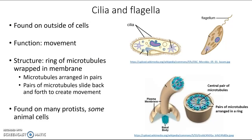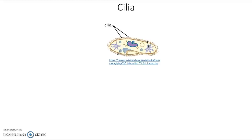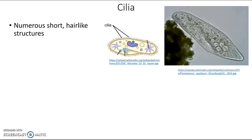Let's take a closer look at each one, starting with cilia. Cilia are numerous short, hair-like structures on the outside of a cell. Here in this diagram you can see all those little fuzzy structures around the edges, and here in a picture of an actual cell — a protist called paramecium — you can just barely see all these tiny hair-like structures around the edges of the cell, making it look a little bit fuzzy.